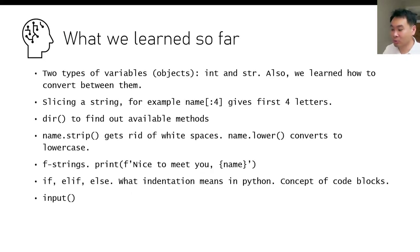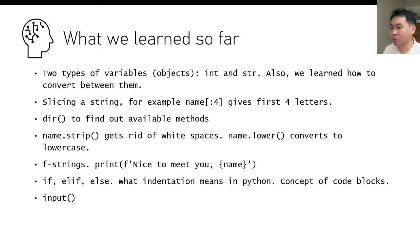We've already gone through two lessons and learned a lot, so let's review. First, there were int and string objects — two types of variables. Some are numbers and some are strings, and they behave differently. You also have functions to convert between them. We learned how to slice a string — for example, `name[:4]` gives you the first four letters. The `dir()` function lets you find all available methods. For example, `name.strip()` removes whitespace and `name.lower()` converts to lowercase.